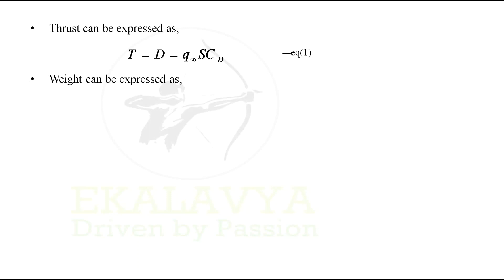In a similar manner, weight can be expressed as weight equals lift for level unaccelerated flight. Weight can also be expressed as the product of dynamic pressure, wing area, and coefficient of lift. So overall: Weight = Lift = q∞ × S × CL. Let us denote this as Equation 2.